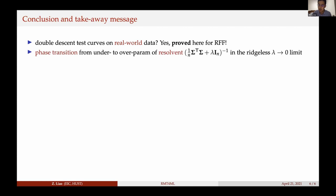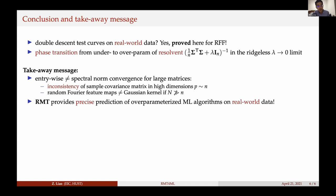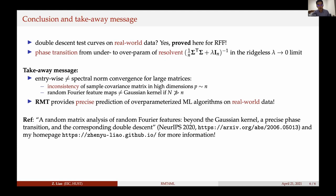This is essentially due to a phase transition from the under- to over-parameterized regime of the so-called resolvent matrix of the random Fourier feature Gram matrix in the limit where the regularization parameter goes to zero. Some key takeaways: for large machine learning systems, entry-wise convergence does not immediately imply spectral norm convergence, as seen in both the sample covariance matrix and random feature model examples. Random matrix theory provides a tool to understand over-parameterized large-scale machine learning systems on real-world data. Thank you.